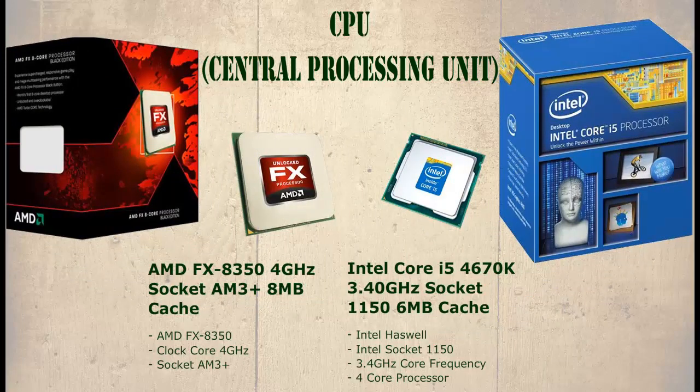A CPU can be identified by a make and a model number. Often some reference to its processing speed will also be made. From these descriptions we can find important information such as speed, model, and manufacturer.